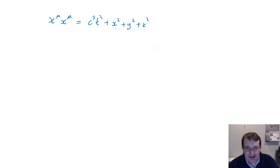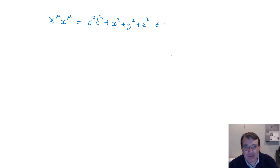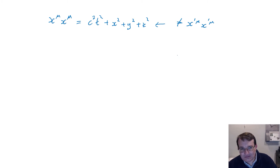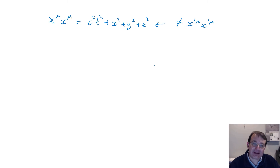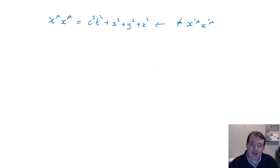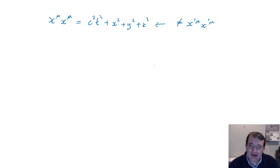However, there is a problem: this quantity is not helpful in relativity because it varies between different inertial frames. You can check this yourself by doing the Lorentz transforms — you'll find that x^μ x_μ does not equal x'^μ x'_μ. What we want is a magnitude that is invariant, the same value in all inertial frames, just as the magnitude of a position vector is the same in all frames in classical Newtonian relativity.